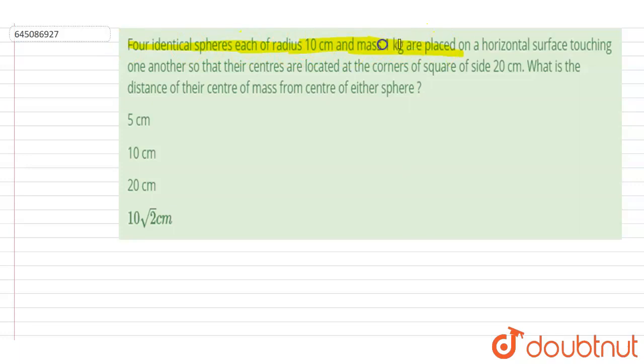of radius 10 centimeters and mass 1 kg are placed on a horizontal surface touching one another so that their centers are located at the corners of a square of side 20 centimeters. What is the distance of their center of mass from the center of either sphere?